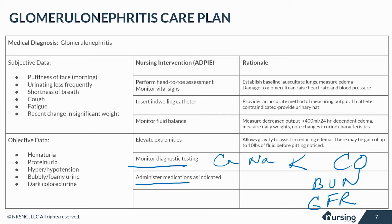When considering medications, sometimes glomerulonephritis will clear on its own, so it's important to know that. Depending on the severity of the symptoms and progression of disease, diuretics are often given to remove excess fluid, anti-hypertensives to manage blood pressure caused by fluid retention, and electrolyte supplements like potassium and calcium to maintain homeostasis.